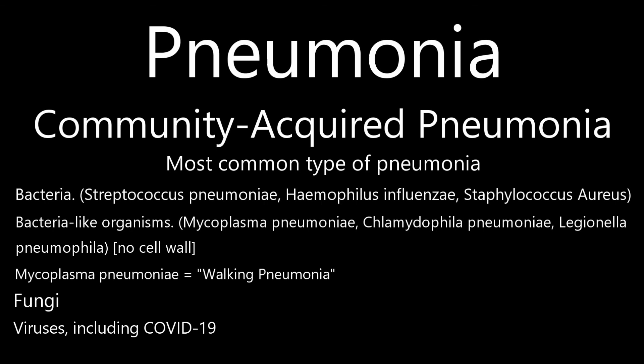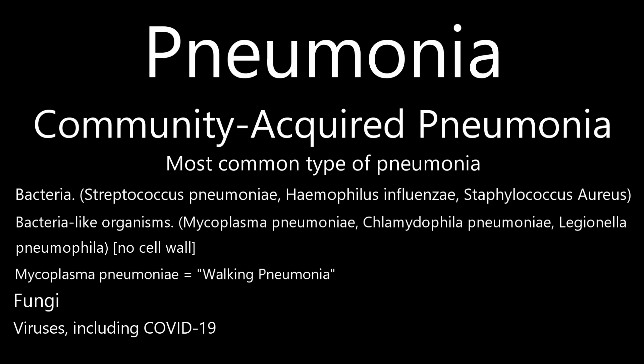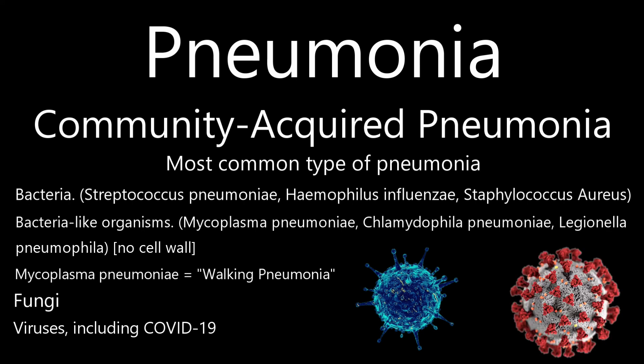Fungal pneumonia is most common in people with chronic health problems or weakened immune systems, and in people who have inhaled large doses of the organism. The fungi that cause it can be found in soil or bird droppings and vary depending on geographic location. Some of the viruses that cause flu and colds can also cause pneumonia. Viruses are the most common causes of pneumonia in children younger than five. Viral pneumonia is usually mild, but can be very serious in some cases. COVID-19 may also cause pneumonia, which can become very severe.